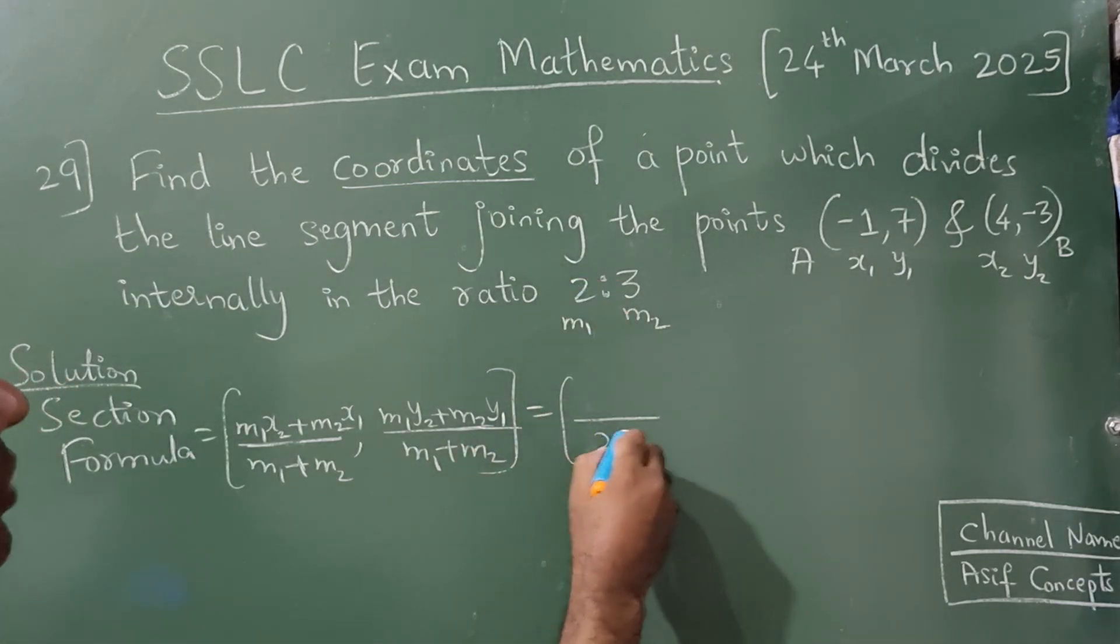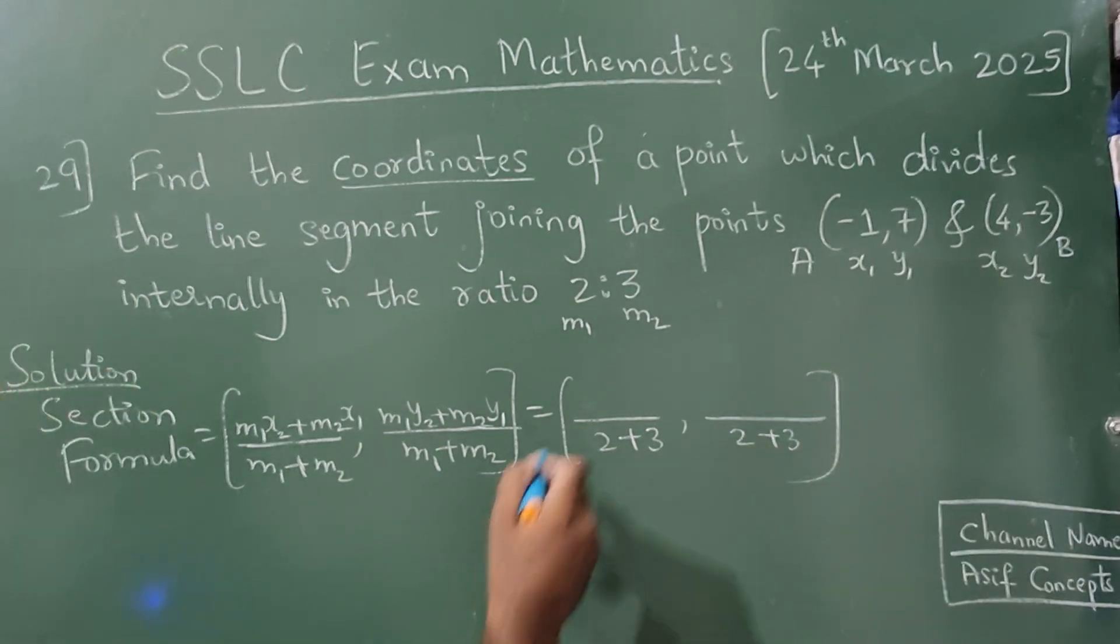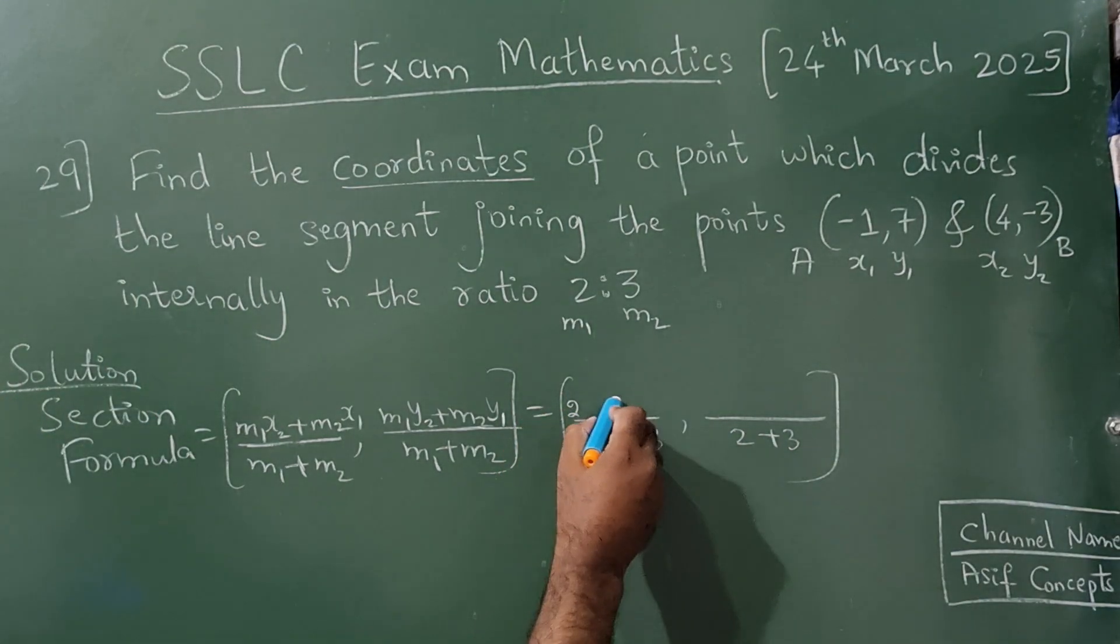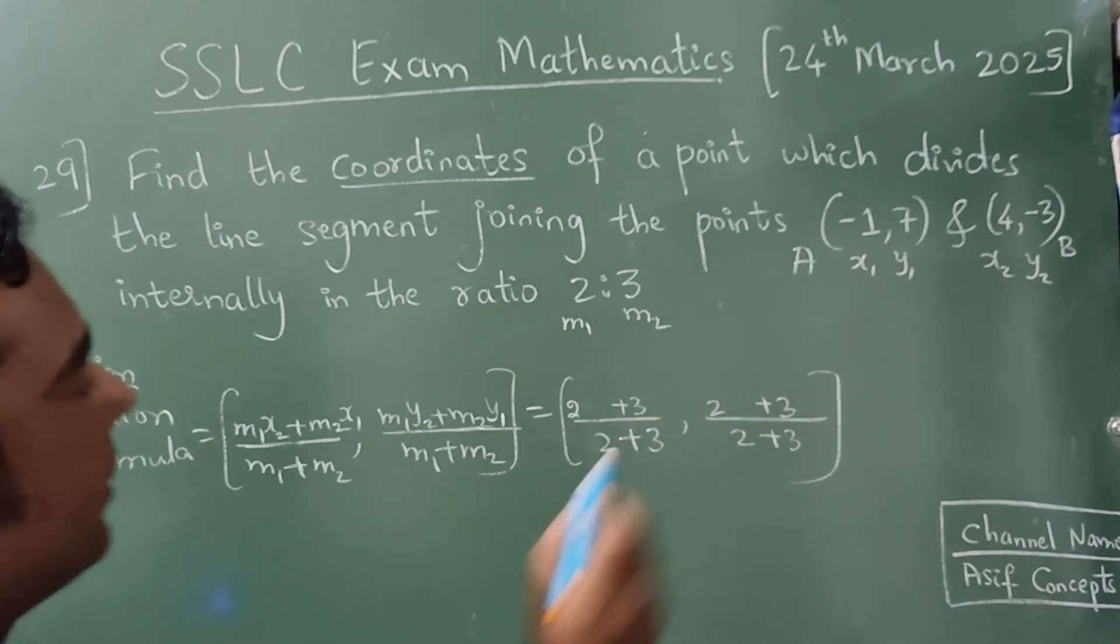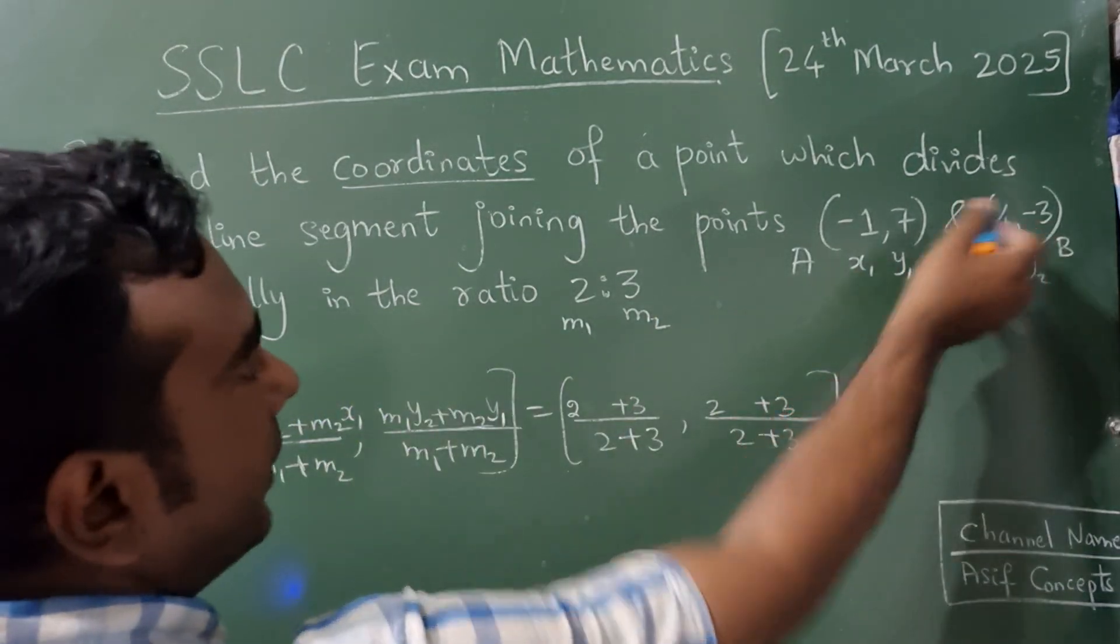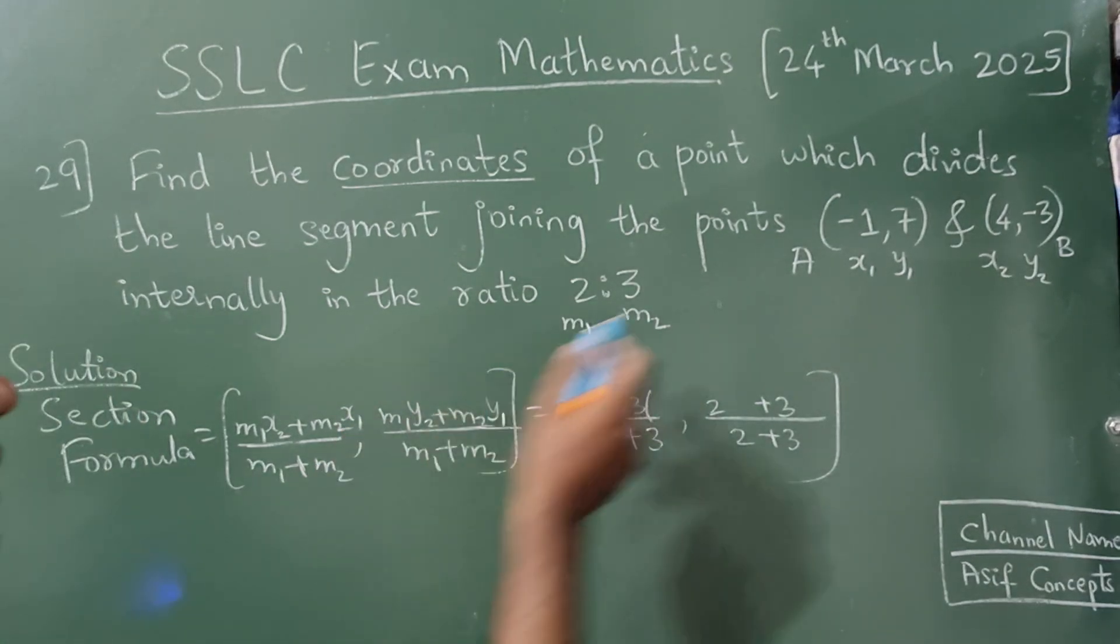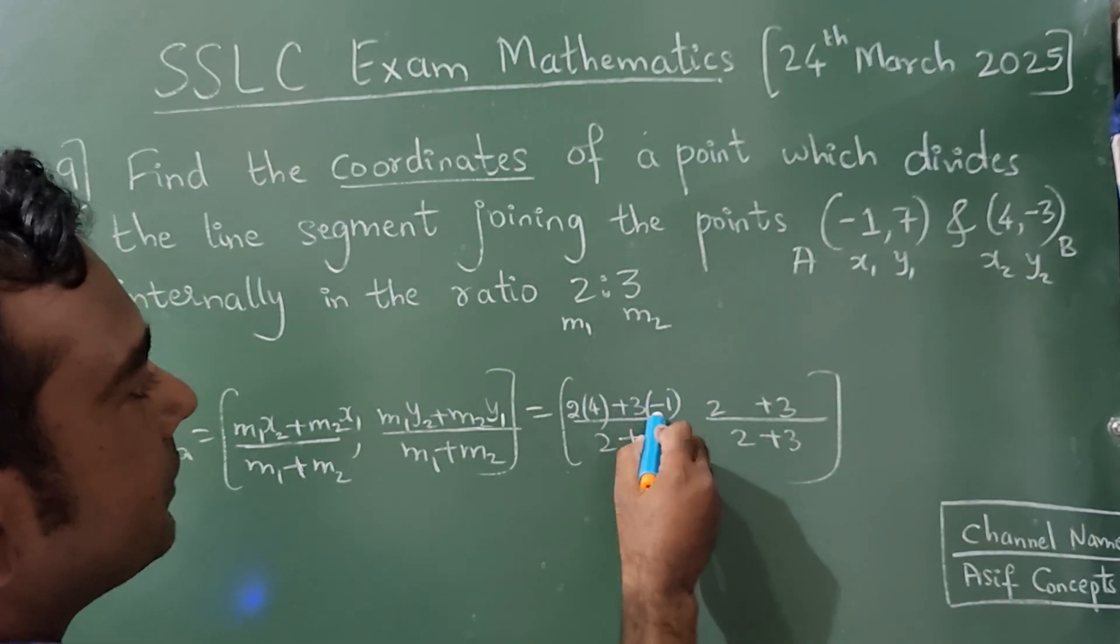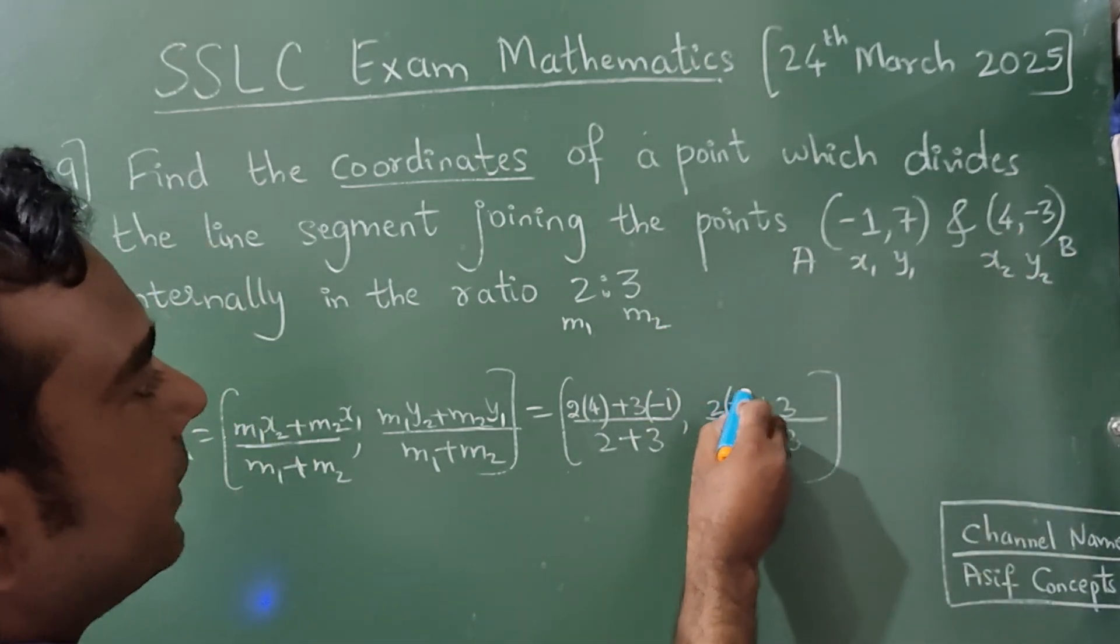Now what is m1? It is 2 plus 3. Here also write 2 plus 3 as I have told. Here 2 plus 3, right here 2 plus 3. What is x2? It is 4. Here x1, x1 is how much? Minus 1. What is y2? It's minus 3.